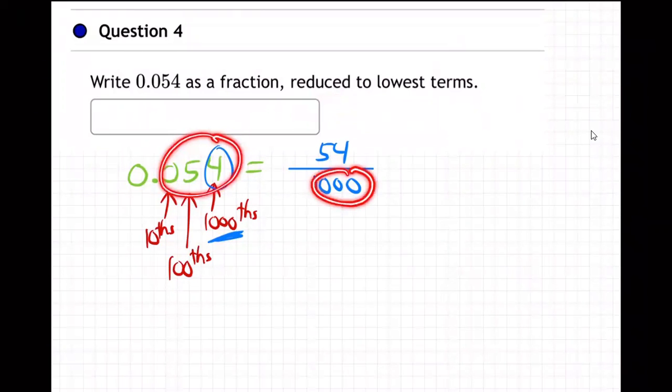See how this... three decimal places, three zeros on the bottom, which means a thousand. Three decimal places, three zeros on the bottom. That's another way you can do the same thing.